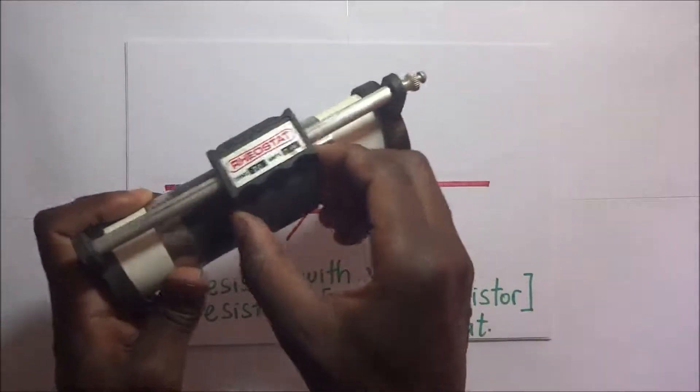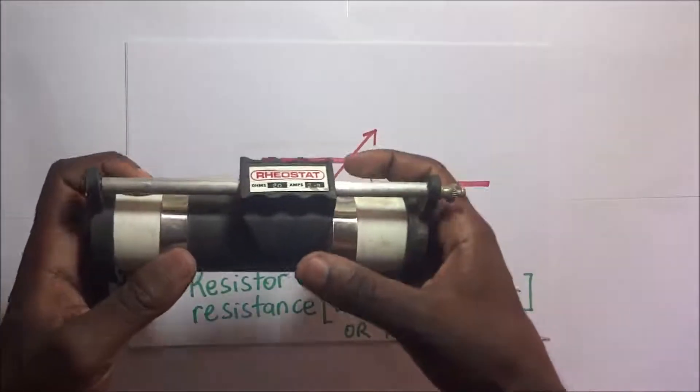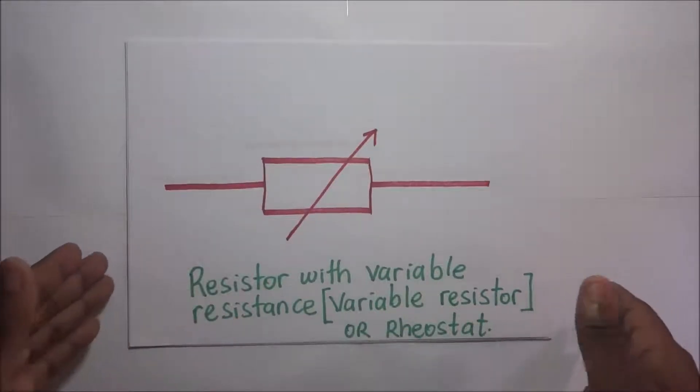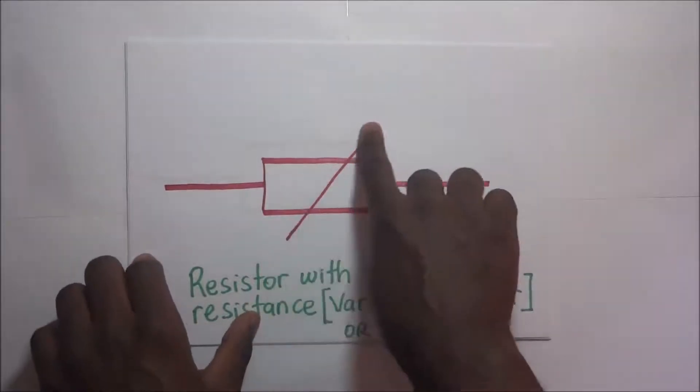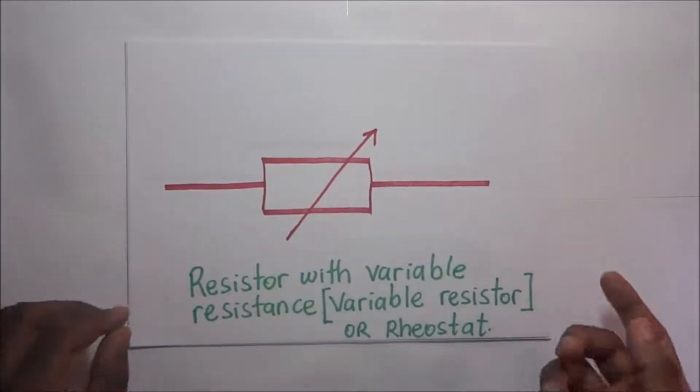This arrow signifies that the resistance can be varied. However, if we have a resistor whose resistance cannot be varied and it is fixed, then we remove this arrow and simply draw that box to show it's a resistor with fixed resistance, as shown right there.